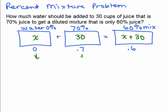So now what we're going to do is figure out how much pure juice is in each container. Well, that will be 0 or 0 times X. How much is in this container? Well, 70% of 30. And how much is in this container? 60% of X plus 30.